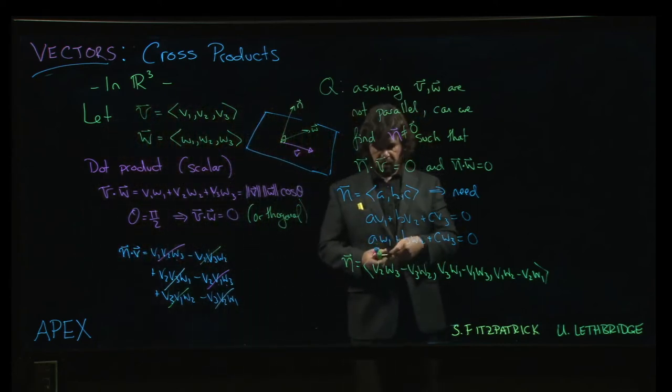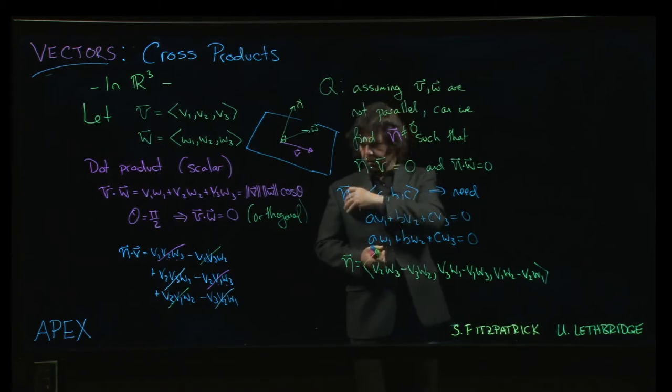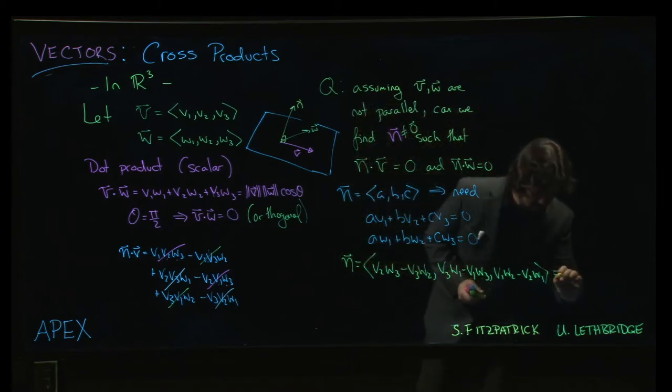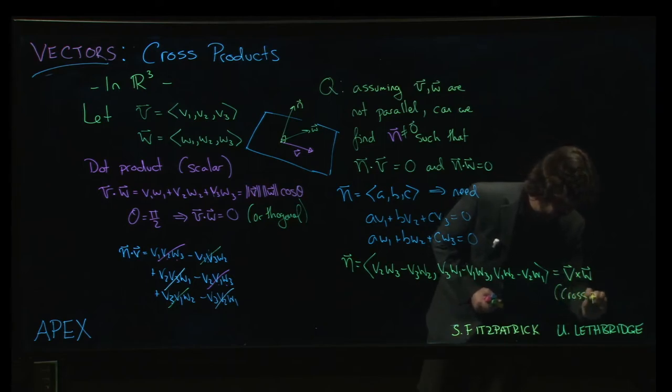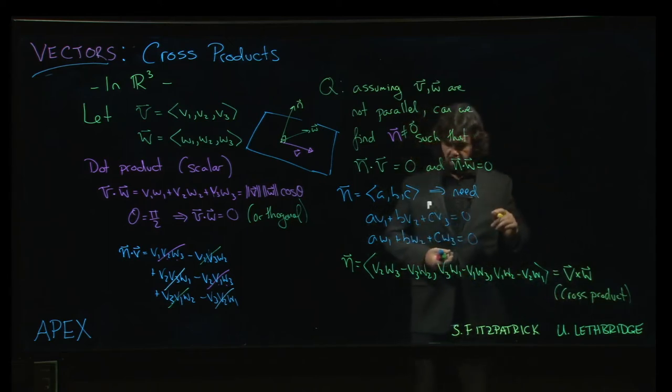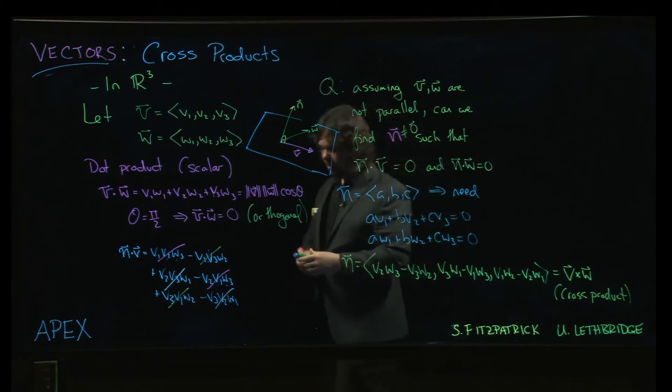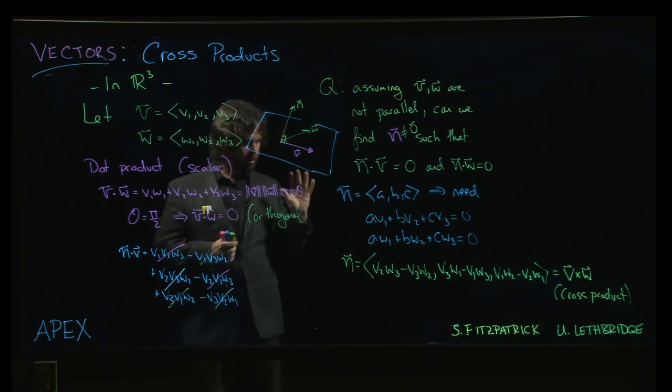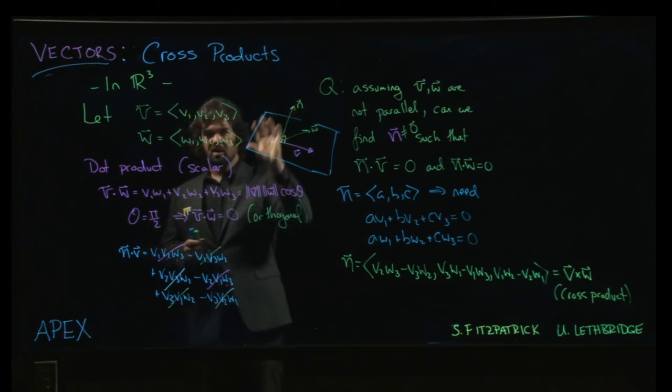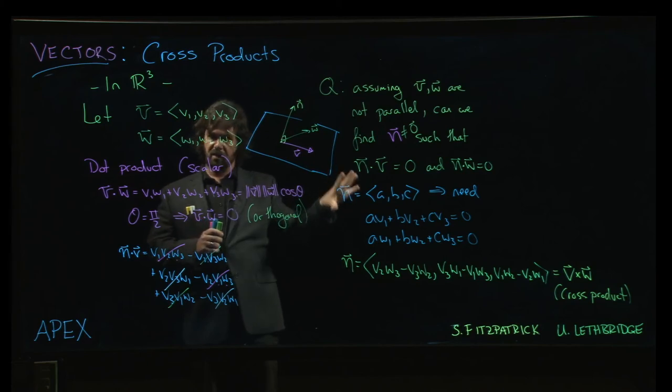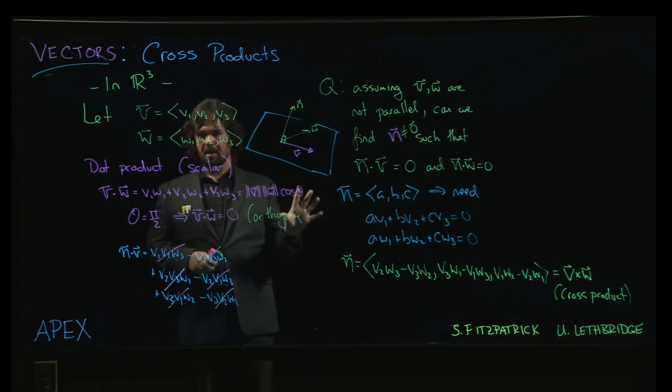So this vector that we ended up with here at the end, the notation for this, we write this as v cross w, and we call this the cross product. The main use of the cross product, we're going to see that it turns out there are actually some other interesting, cool applications of the cross product. It turns out to be useful for a few things, but the primary use of this cross product is constructing this vector that is orthogonal to a given pair of vectors. That's the main reason that we're going to want it, but we're going to see that there are a couple of added perks that come along the way.